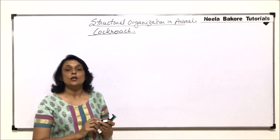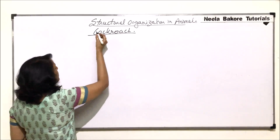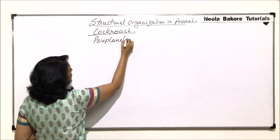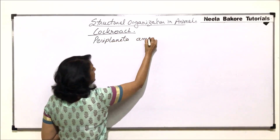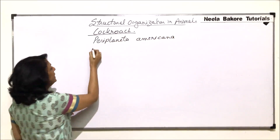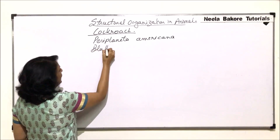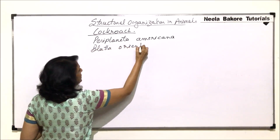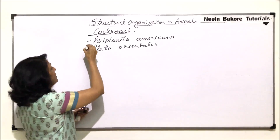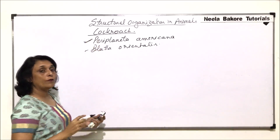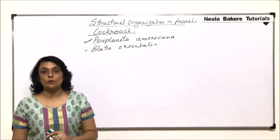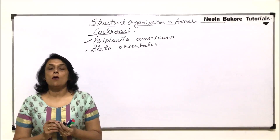There are two species. One is the American variety of cockroach which is called Periplaneta americana, and the oriental or Indian variety is called Blatta orientalis. These are the two main varieties we normally talk of. We will be talking about the structure of Periplaneta americana, the common American cockroach.